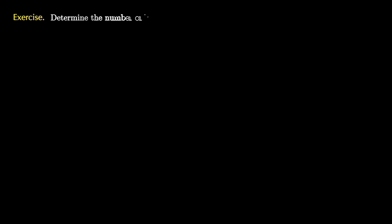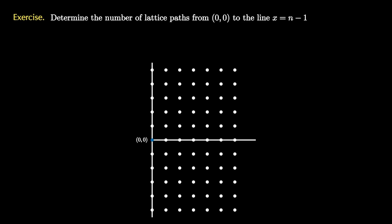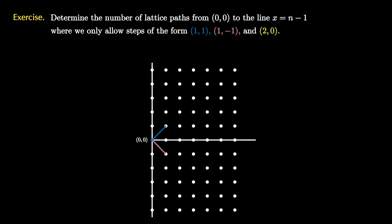Let's finish this video with a challenge problem where you have to find a recursion and then use the characteristic roots theorem. We want to determine the number of lattice paths starting at the origin (0,0) and ending at the line x equals n minus 1, where we're only allowed steps of the form (1,1) — over 1 and up 1 — (1,-1) — over 1 and down 1 — or (2,0) — two steps to the right.